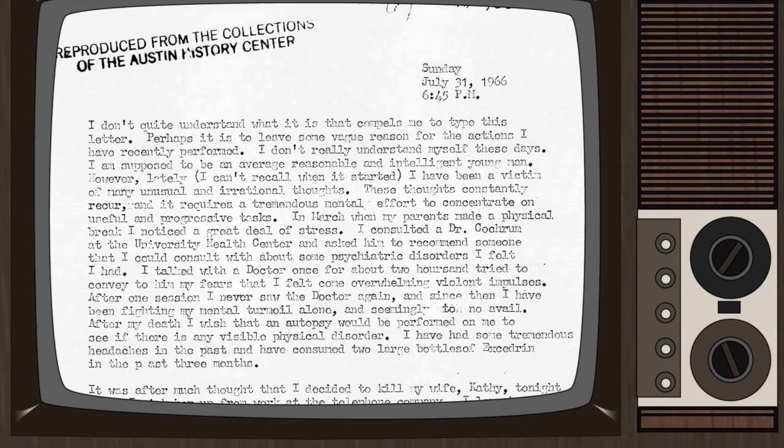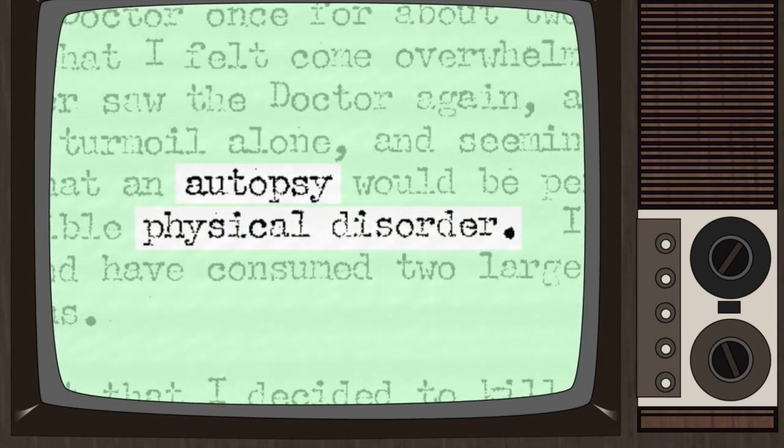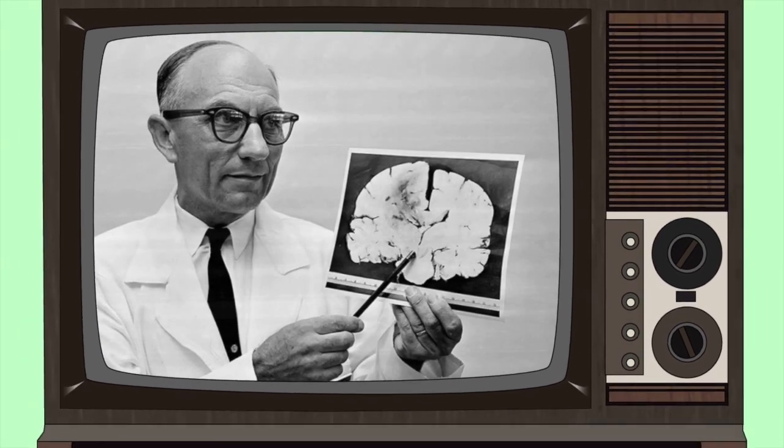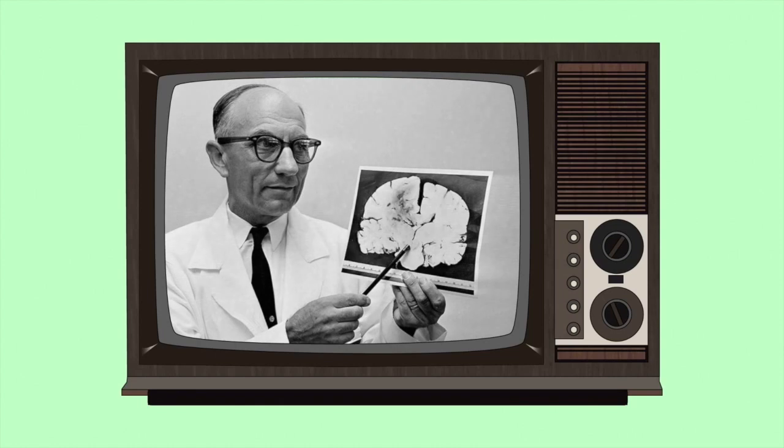In a suicide note, Whitman asked for a brain autopsy, fearing something was wrong. This revealed a tumour pressing against his amygdala. Could this malfunction have caused a mass shooting? And the drama doesn't stop there.